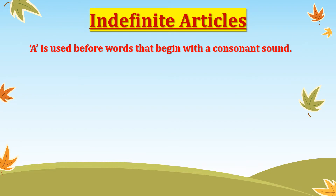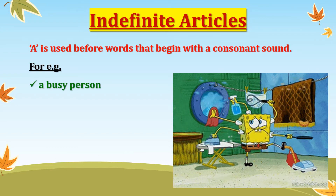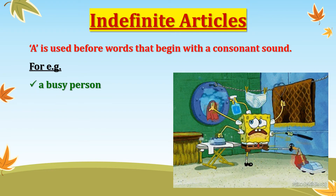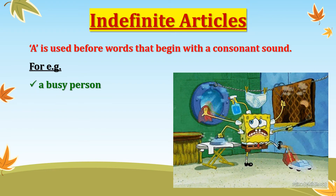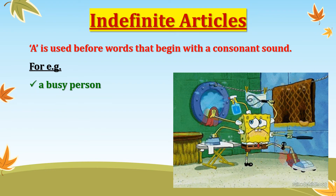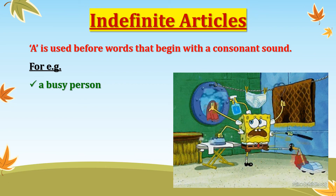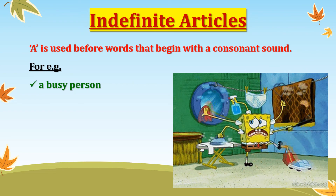'A' is used before words that begin with a consonant sound. We go by the sound and not the letter. For example, 'a busy person.' This word 'busy' is starting with a consonant sound, that is why we have used the article 'a' here.